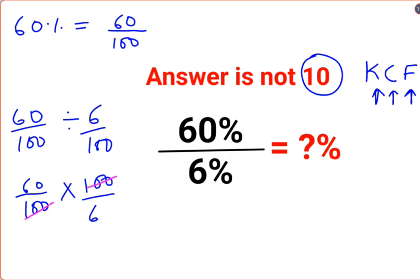So what happens is this and this gets cancelled, this and this also gets cancelled and you get the answer as 10. But yet, I am saying that the answer is not 10. Why?